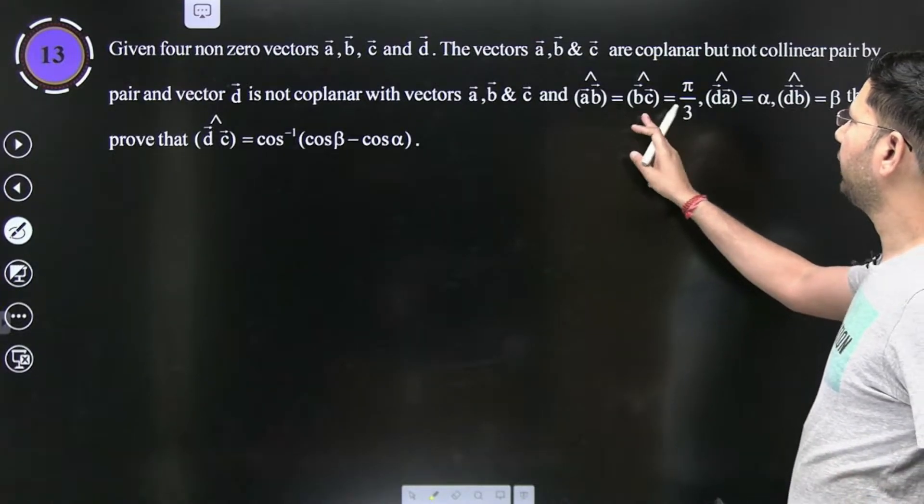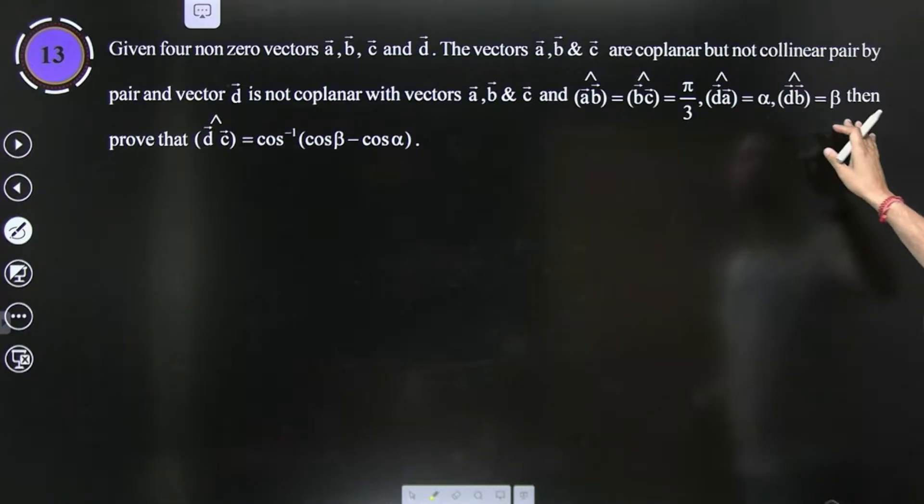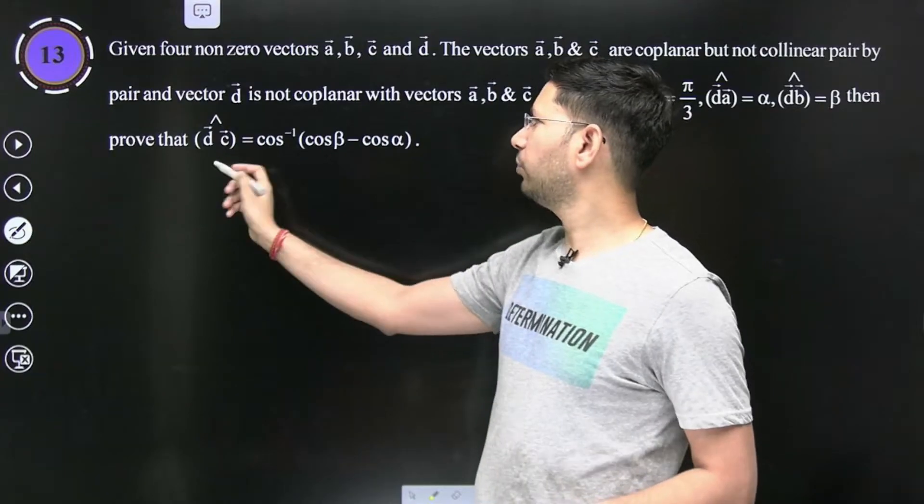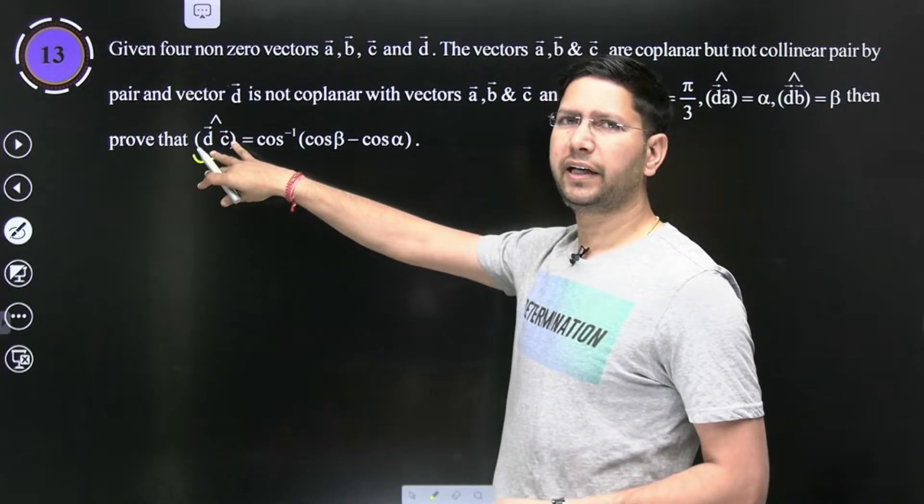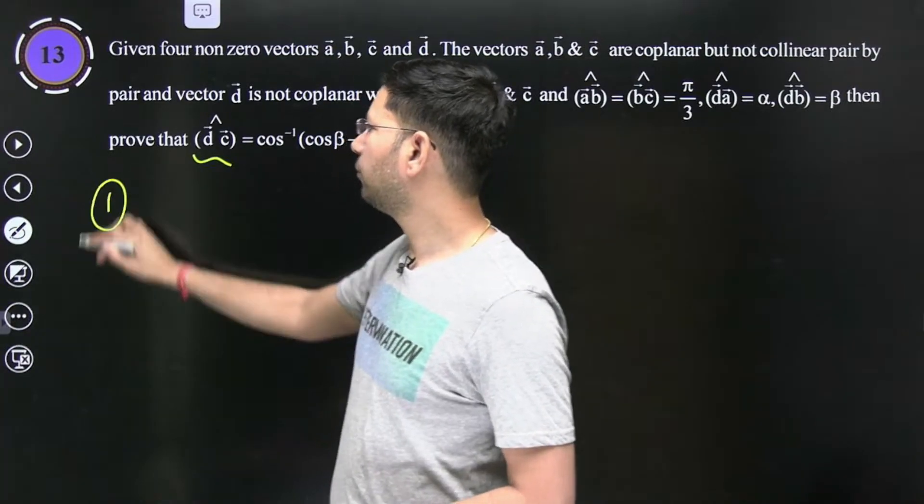A or B ke beech ka angle, B or C ke beech ka angle 60, 60 hai. D or A ke beech ka angle alpha hai, D or B ke beech ka angle beta hai. Then D or C ke beech ka angle cos inverse hai, ya phir aise maan lo ki cos of angle between D and C is cos beta minus cos alpha. Aise apne ko proof karna hai.